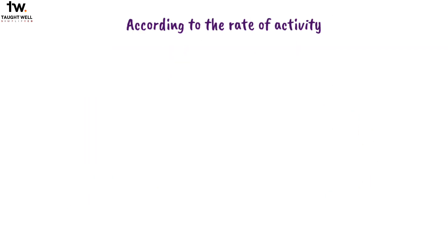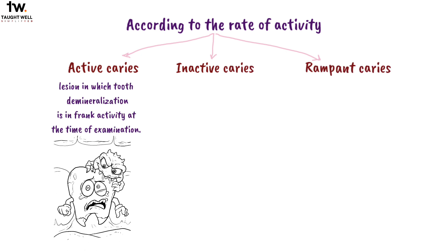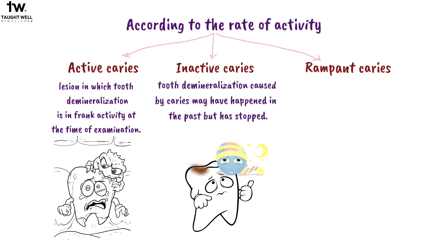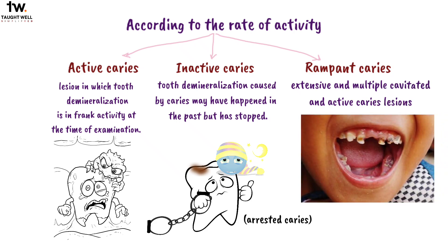According to the rate of activity, caries could be active, inactive, or rampant. An active caries lesion is biologically active — one in which tooth demineralization is in frank activity at the time of examination. An inactive caries lesion is biologically inactive at the time of examination, also referred to as arrested caries. Rampant caries describes the presence of extensive and multiple cavitated and active caries lesions in the same person.